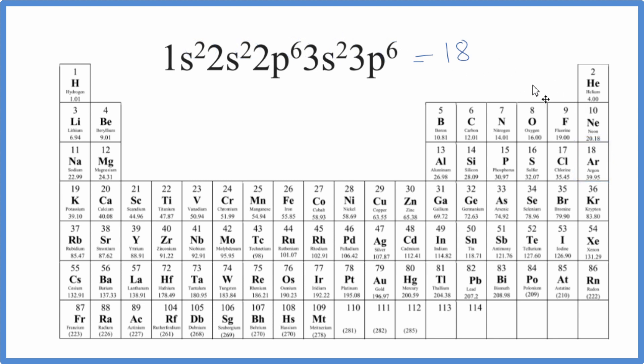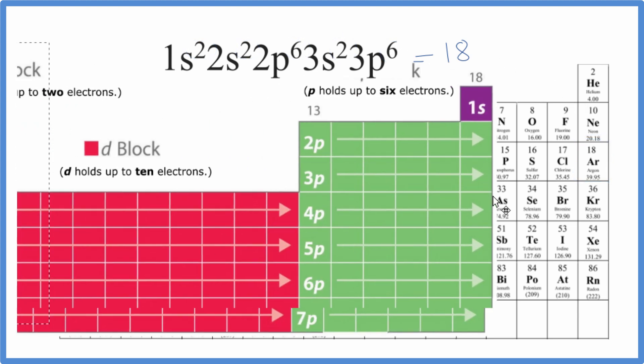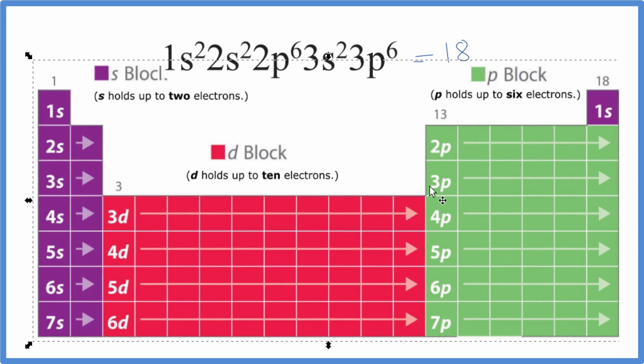There's another way we could do this. We could look at the periodic table broken down into orbital blocks. So here's our periodic table. We can see we have our s block, d block, p block.